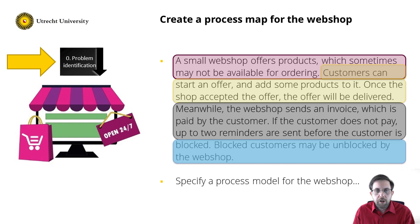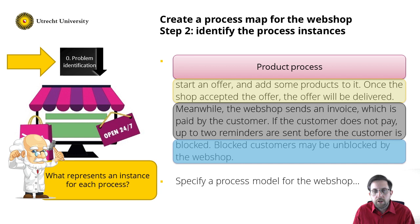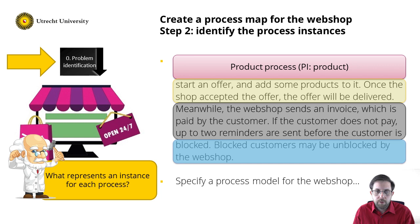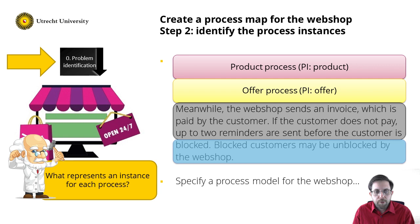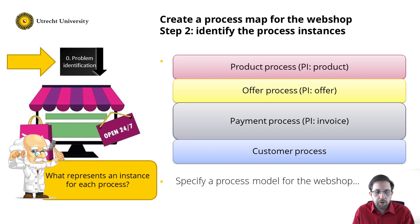Now that we have identified the processes, we can ask: what is the process instance for each of the four processes? The first process is about availability of products, so a logical choice is that process instances resemble the products the webshop offers. The second process is about processing offers, so the process instance resembles offers. The third process is about payment of offers — however, payment is not a direct object for all activities, so going back to the text, we see that customers receive and pay an invoice. Hence, invoice is a good candidate as the direct object. The last part describes how customers are managed — so the customer would be the logical process instance for the customer process.